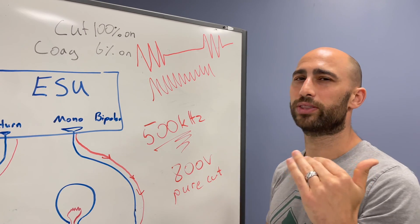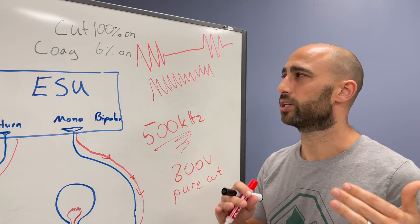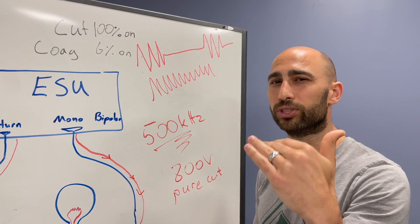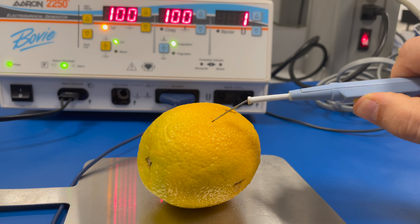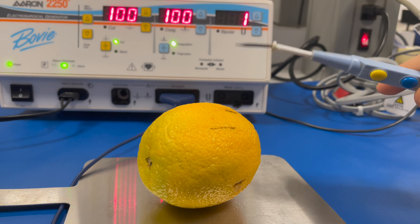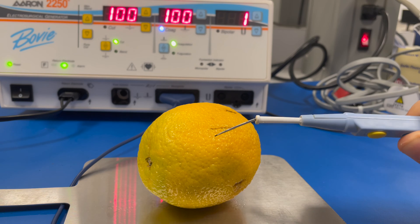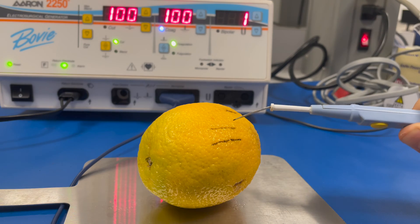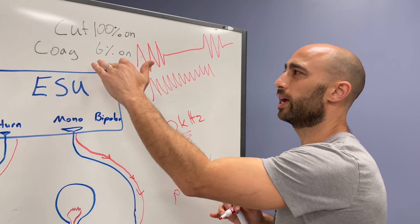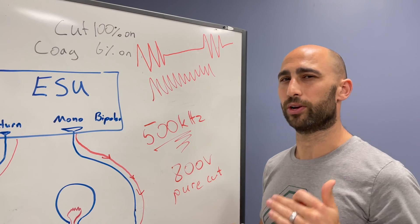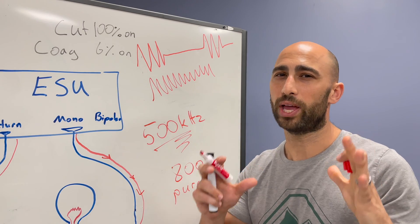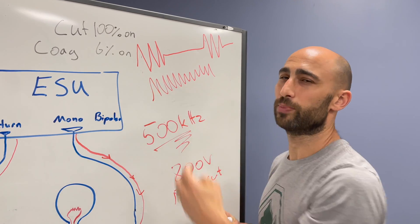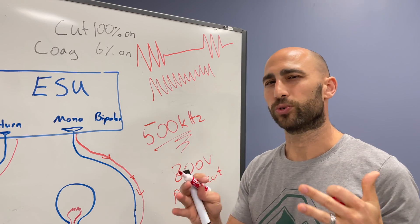For deeper cuts, cut mode is better — it's at 100% on and lower voltage, which penetrates deeper into tissue. If you are trying to desiccate or use fulguration, coag works well because it has that higher voltage. Let's take a look at the difference between cut and coag on our orange — here you can see cut at 100 watts, and now coag, with a lot more surface effects. A blend goes somewhere in between: instead of 6% on, you might do 10% or 20% on, and that's your blend function.